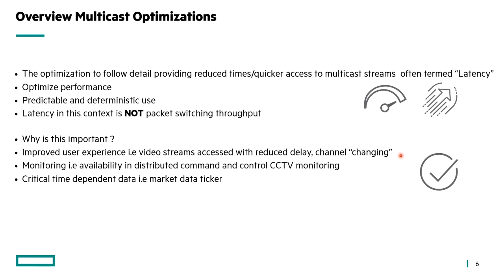It's a better user experience. For video streams, you get reduced delays — for example, channel changing in a multicast-based video stream means you get that stream quicker. You could have field operations, say a quick pop-up situation where you have to quickly set up a network with command and control that has some multicast — monitoring around the perimeter of a camp, perhaps in a military situation. And then things like financial markets where you have market data and ticker information coming in — very critical because financial decisions are made on data available, and you have arbitrage when financial data comes through. Milliseconds count in these situations.